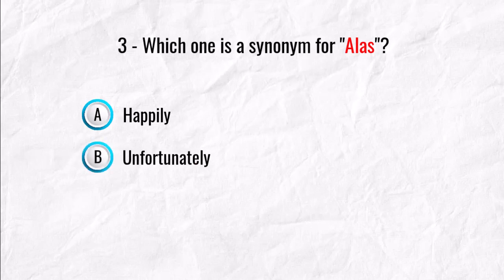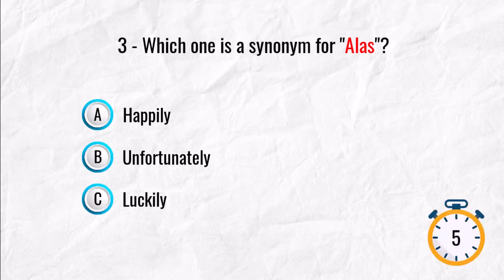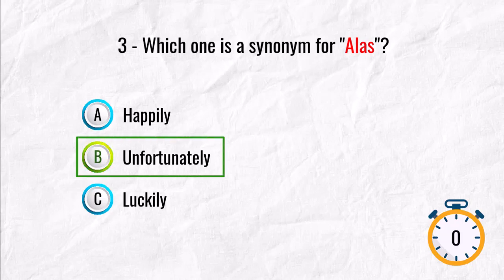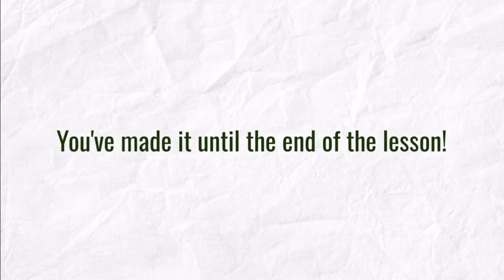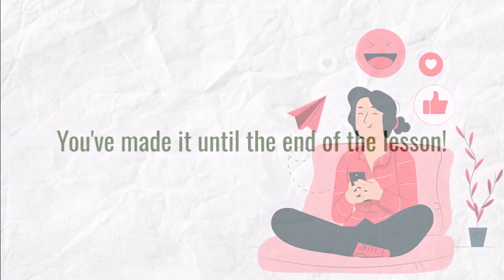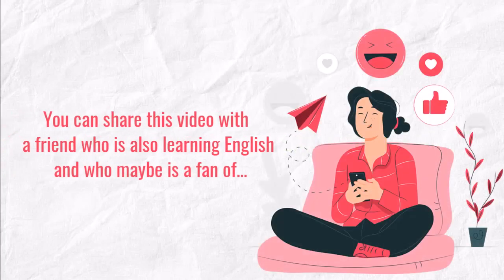Number three: which one is a synonym for 'alas'? A) happily, B) unfortunately, or C) luckily? That's right — the answer is B. So 'alas' means 'unfortunately.' You've made it until the end of the lesson! You can share this video with a friend who is also learning English and who maybe is a fan of ARK.